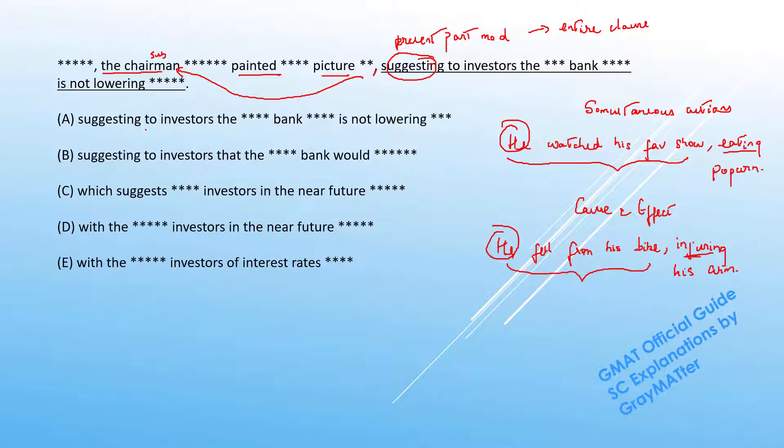Now if you look at the original sentence, in A we have "suggesting to investors the central bank" and B says "suggesting to investors that the central bank." Now there is one main difference that B has "that."